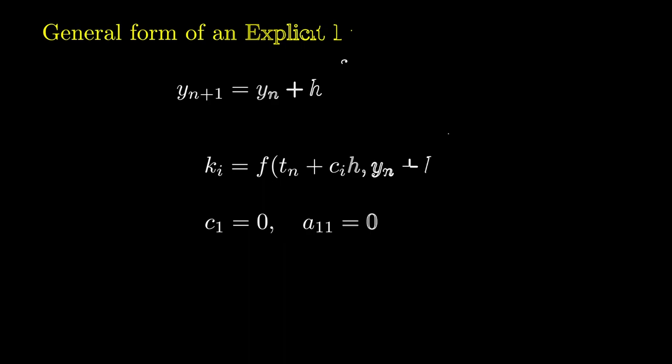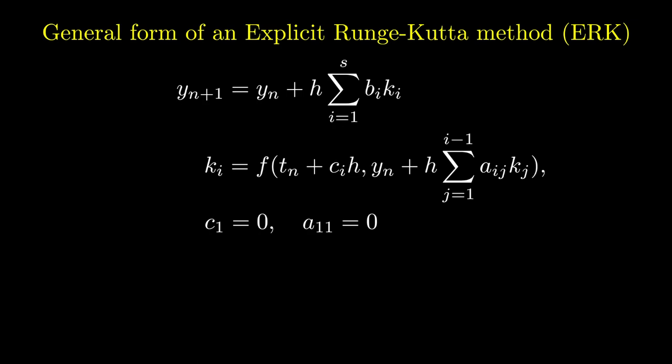The other type of Runge-Kutta method is known as an explicit Runge-Kutta method or ERK for short. Here we have the general form of an ERK method which looks very similar to the one for an IRK which we saw just now. However, the summation in the expression with k_i only includes k values up to i-1. Also the values of c_1 and a_11 are both 0.